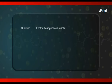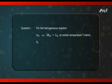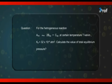For a heterogeneous reaction, A solid equal to 2B gas plus C gas at certain temperature T Kelvin, Kp is equal to 32 into 10 to the power minus 6 atmosphere to the power 3. Calculate the value of total equilibrium pressure for this reaction.